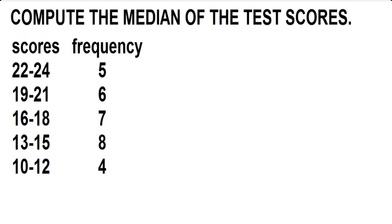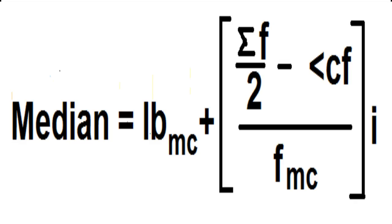Compute the median of the test scores. To compute the median for grouped data, use this formula. Median equals the lower boundary of the median class plus one-half of the total frequency minus the cumulative frequency of the lower class next to the median class, all over the frequency of the median class times the class width.